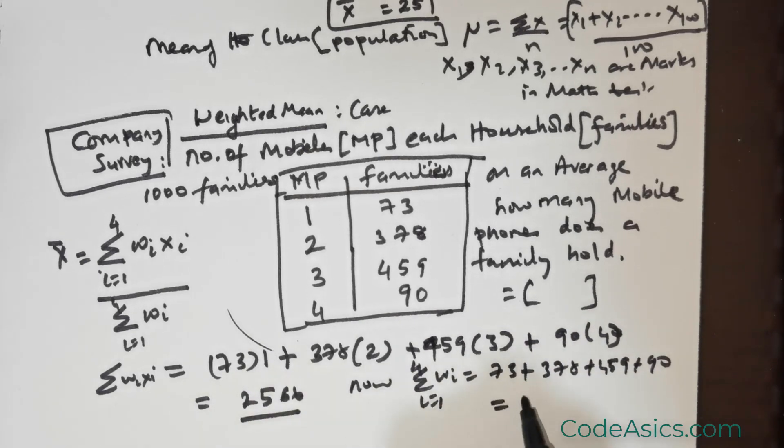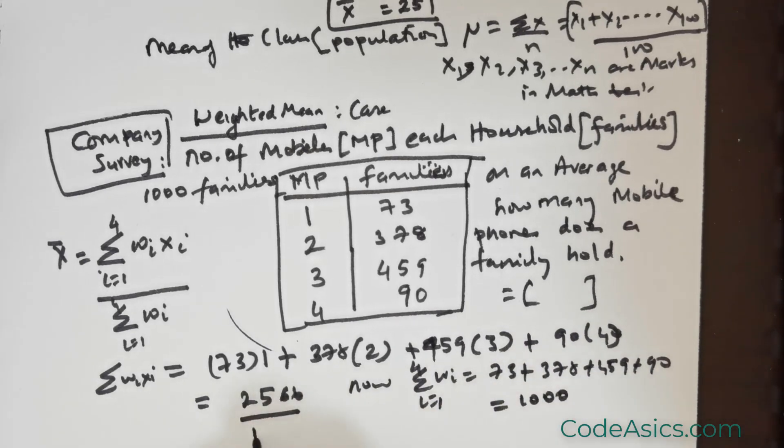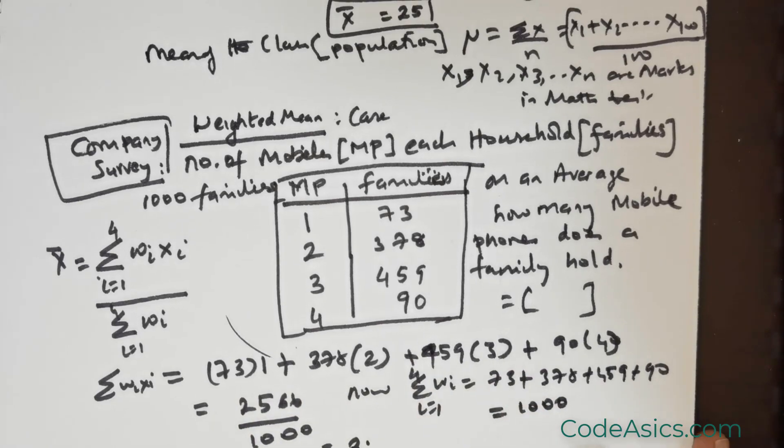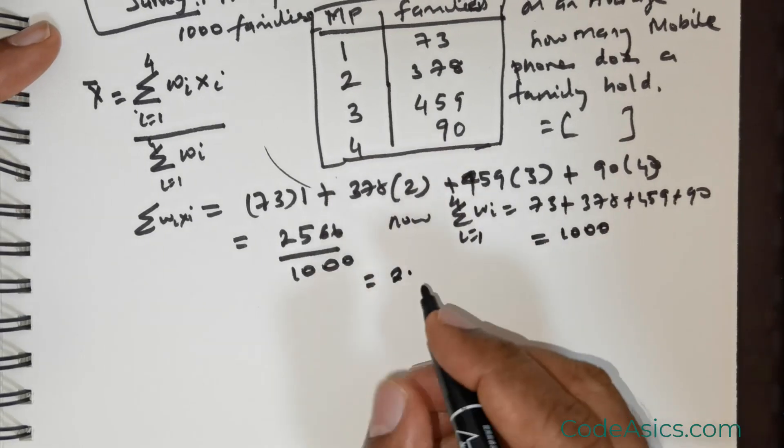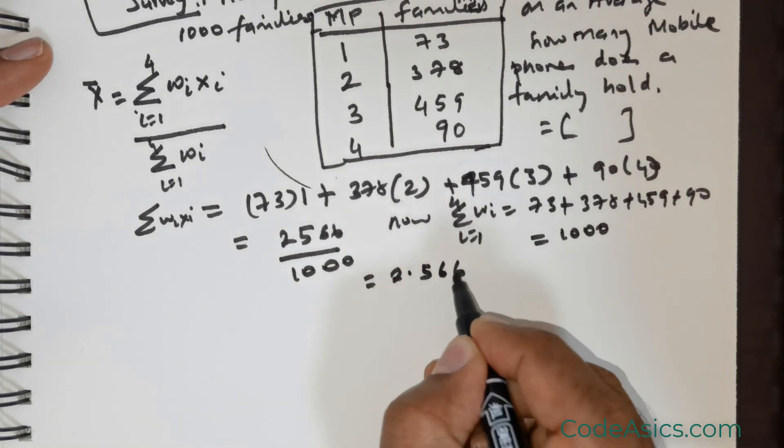And that has accumulated to 1,000. Now divide 2,566 by 1,000, and you get the value of 2.566.